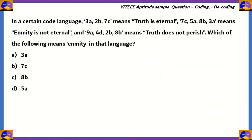Let's look at another question. This one is from coding and decoding. In a certain code language, '3a 2b 7c' means 'truth is eternal'; '7c 5a 8b 3a' means 'enmity is not eternal'; and '9a 4d 2b 8b' means 'truth does not perish'.